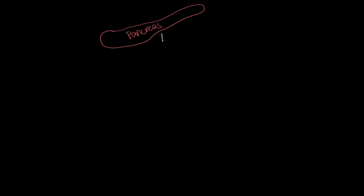So here's my pancreas — not an awesome pancreas, I know, but we know that's what we're talking about. We're talking about diabetes type 1 and 2, and there is a difference between the two. So we'll talk about type 1 and we'll talk about type 2.